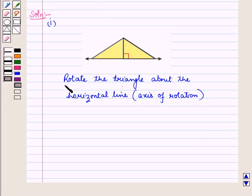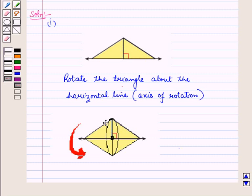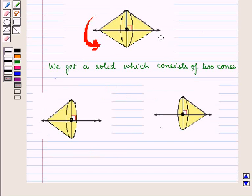We draw this rotation. The vertical line will move up and down. So we draw a circle here. We get a solid which consists of two cones.